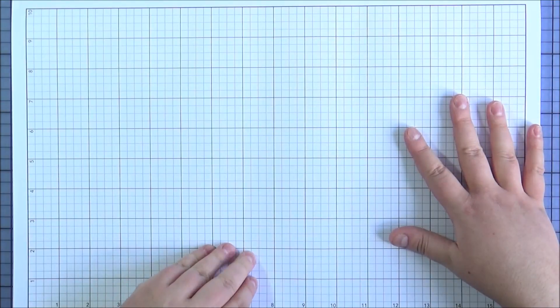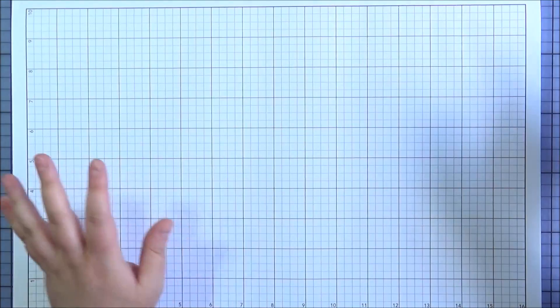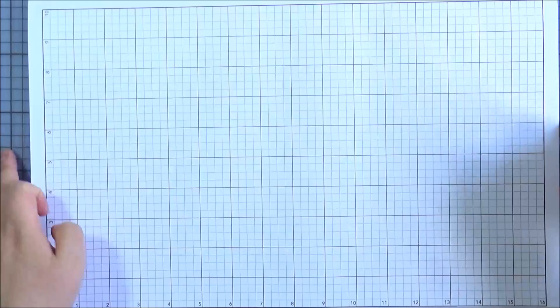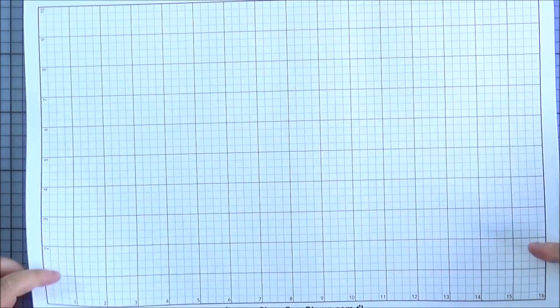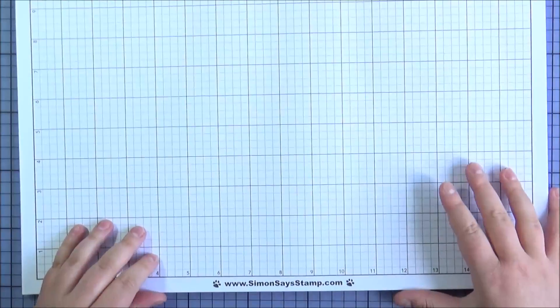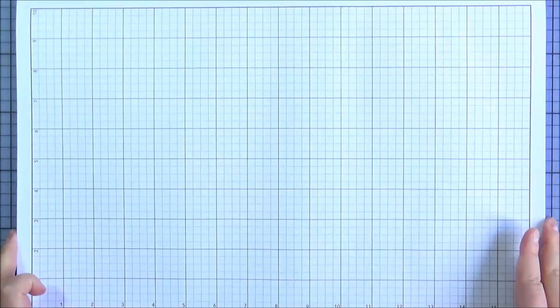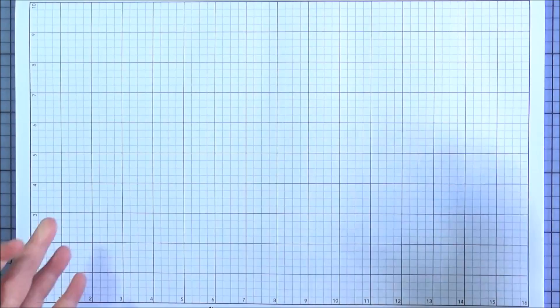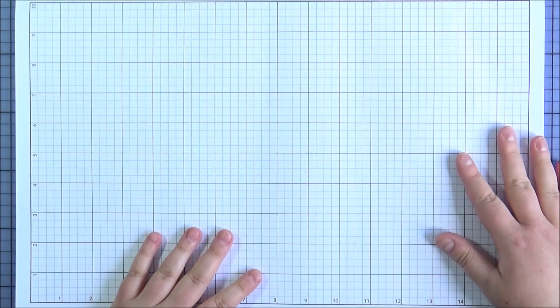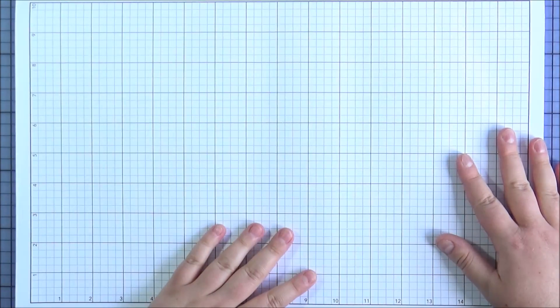I recently, well a while ago, a long time ago actually, I had the Stampin' Up one and I've just got possibly a few little sheets left so I thought I'd go ahead and get the Simon Says Stamp one. It's exactly the same size as the Stampin' Up one and you do get quite a lot of sheets in this pad so I think it will come in quite handy just to protect your work surface and I do like these grid lines.